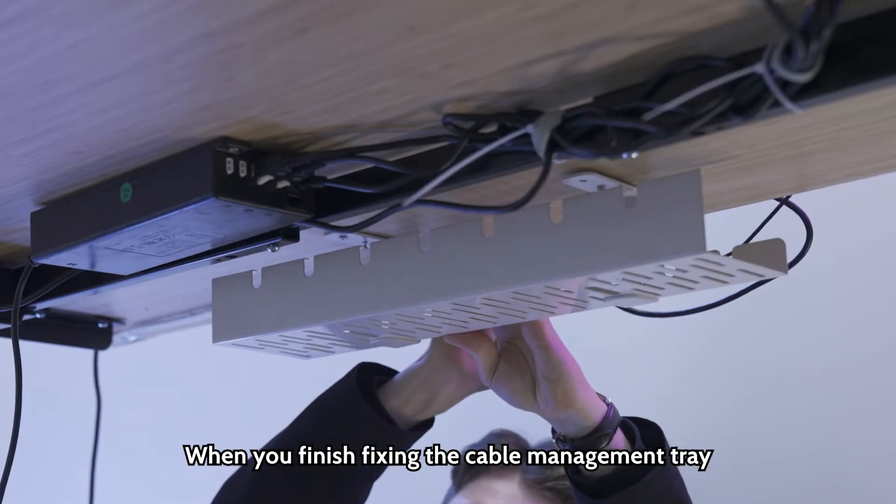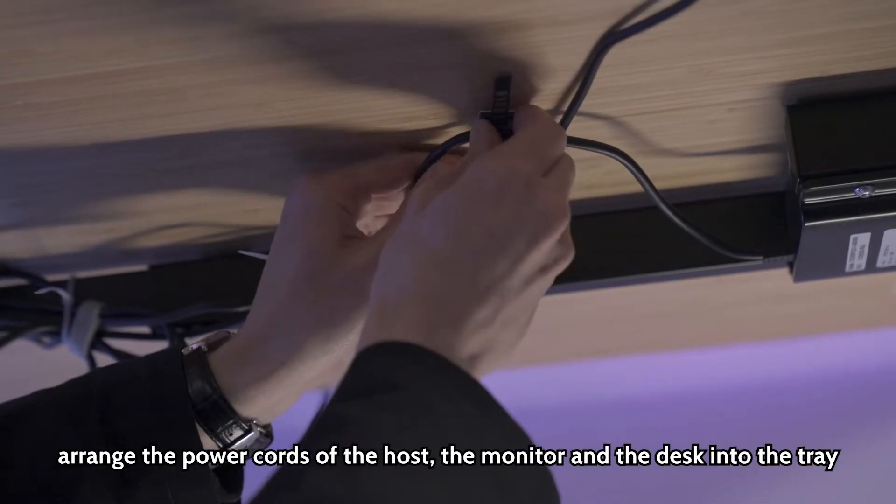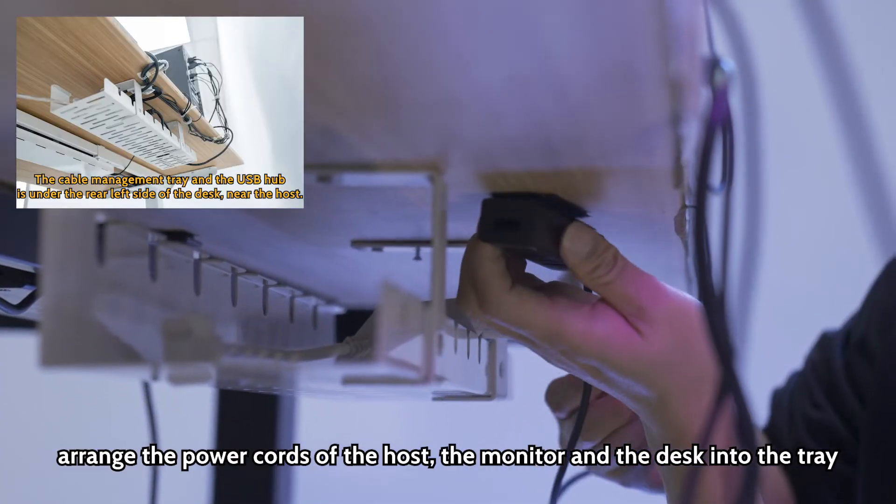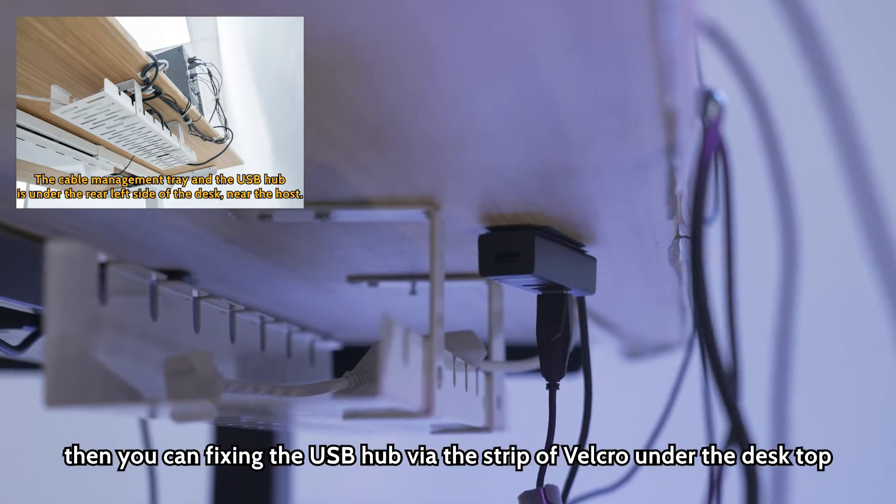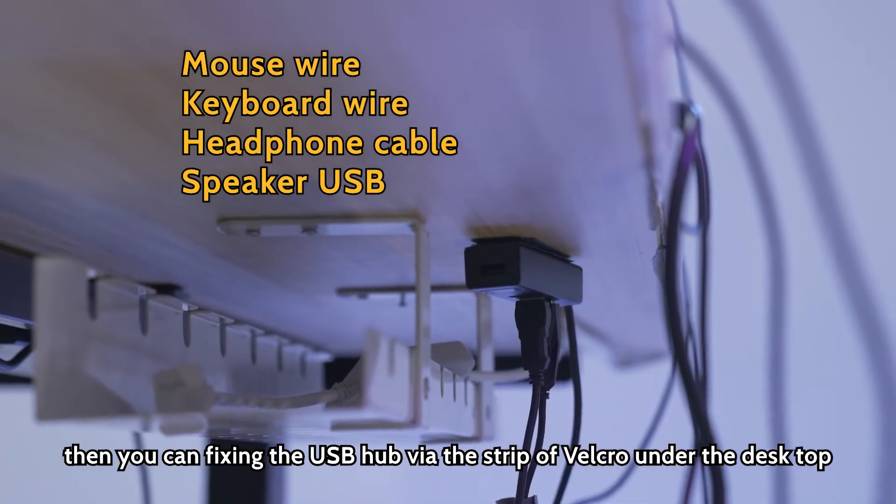When you finish fixing the cable management tray, arrange the power cord of the host, the monitor, and the desk into the tray. Then you can fix in the USB hub via the strip of Velcro under the desktop.